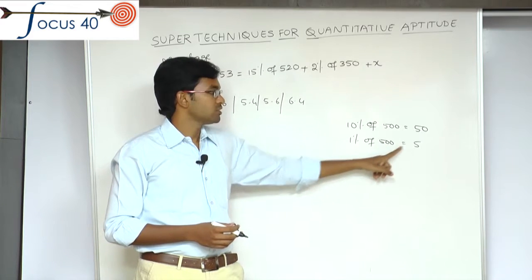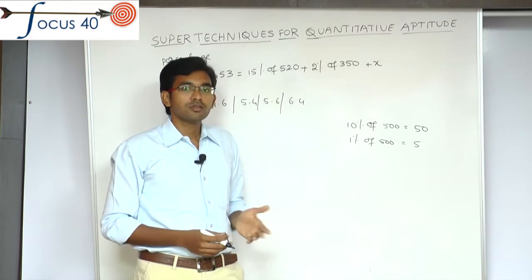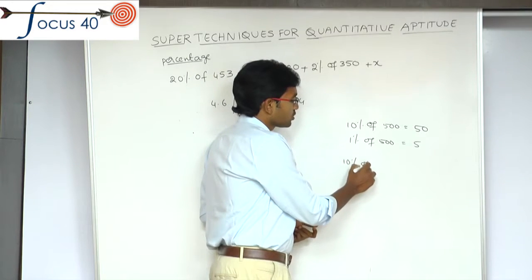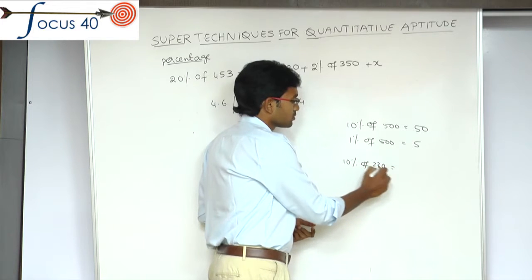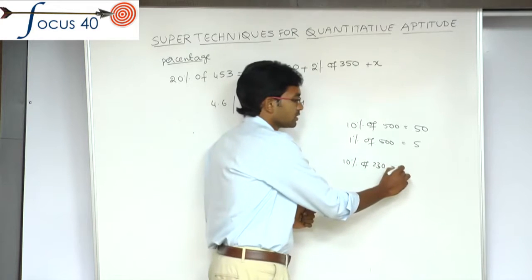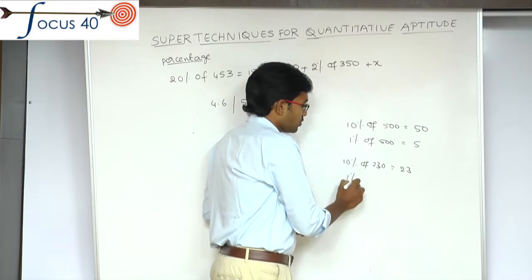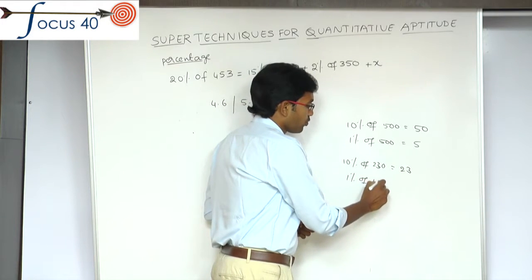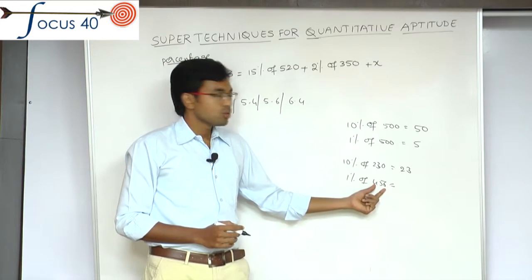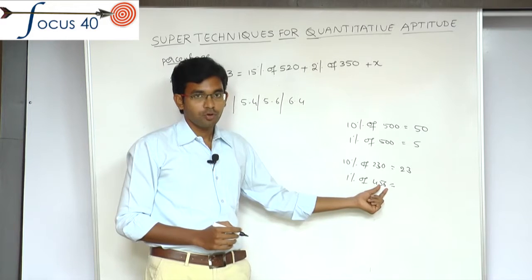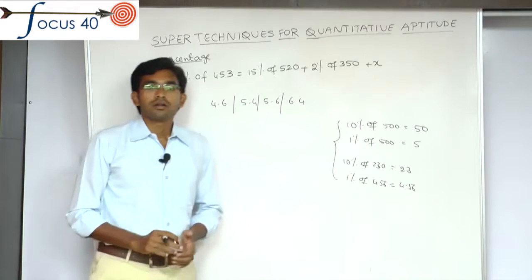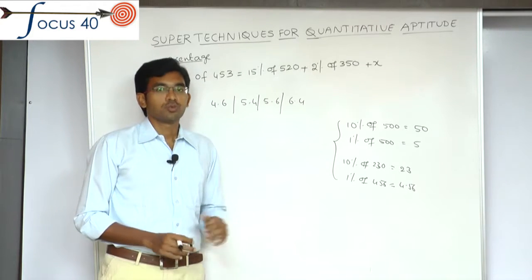This works for any number. For example, 10% of 230: place a dot before the last digit, that is 23. 1% of 456: place a dot before the last two digits, 4.56. These two are the points. Now we can solve this question using these two points.